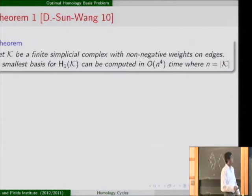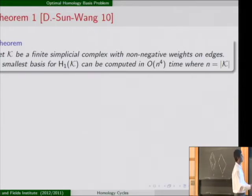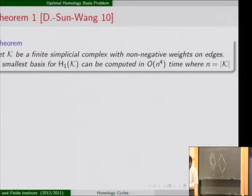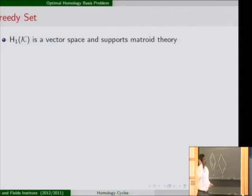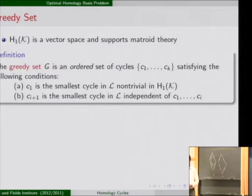So here are the three results I will be talking about today. First, the shortest basis of a simplicial complex can be computed in O(n⁴) time, where n is the size of the complex — the number of vertices, edges, and triangles. I only need to focus up to two-dimensional complexes because beyond that H₁ does not change. Then I will show this can be improved to roughly O(n^2.373), which is the matrix multiplication complexity.